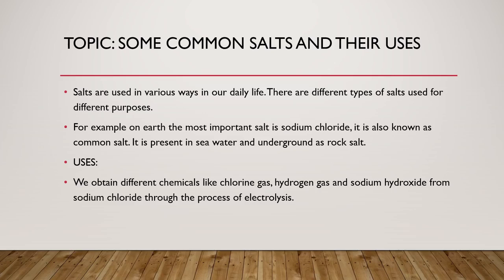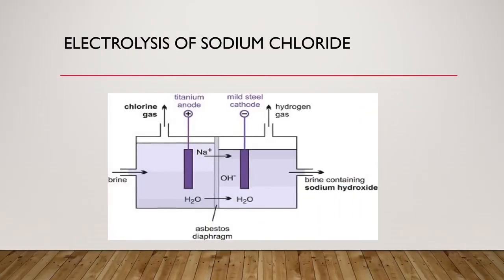Uses. We obtain different chemicals like chlorine gas, hydrogen gas, and sodium hydroxide from sodium chloride through the process of electrolysis. Through the process of electrolysis of sodium chloride in water we obtain other chemical substances.